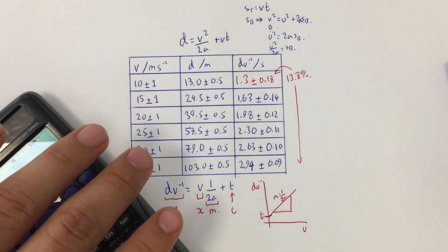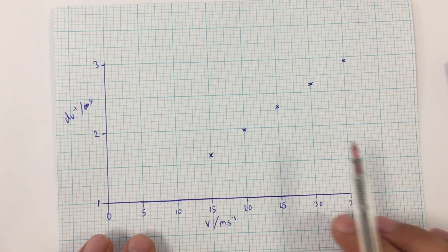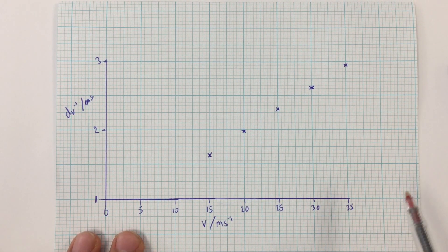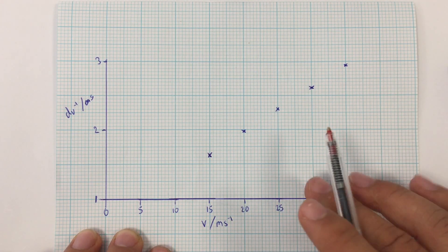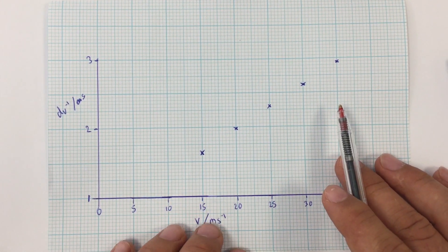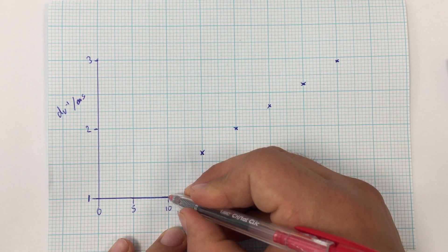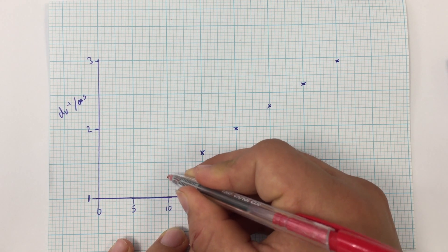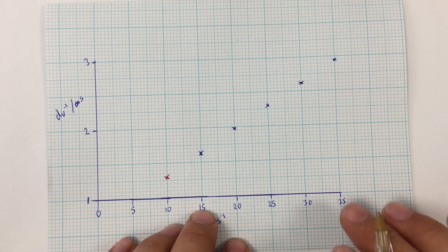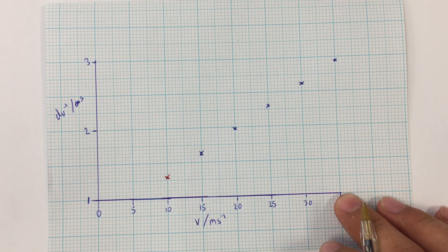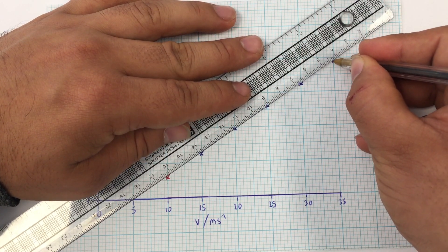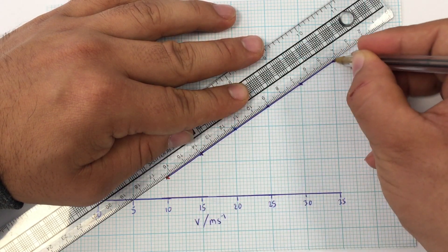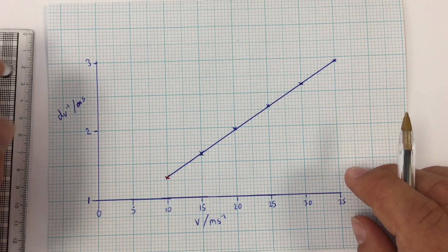Now we want to plot this into the form of a graph. We've got all of our data. I've already plotted d·v⁻¹ against v, with v in meters per second on the x-axis. I've plotted the points we've got; the additional one is 1.3, so at v equals 10, 1.3 goes here. I then draw my line of best fit.